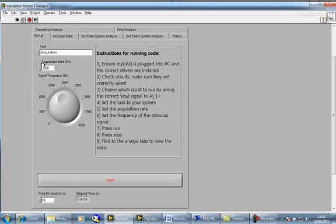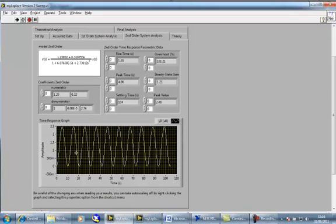Now, as I'm using a second-order system, I will set the task to a second-order system analysis. Flipping to this tab shows the time response, updating every 10 seconds and giving us a transfer function.